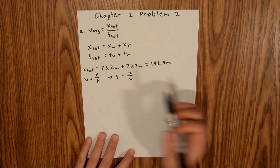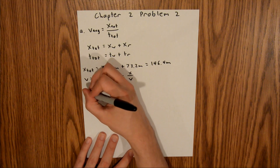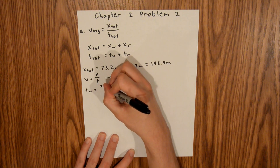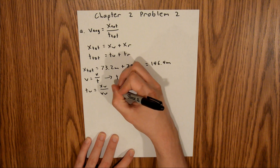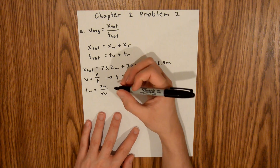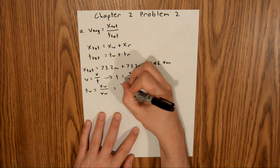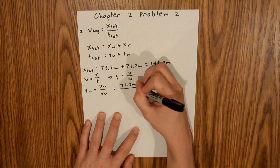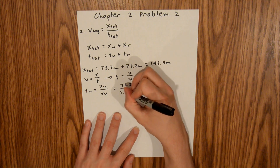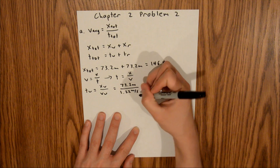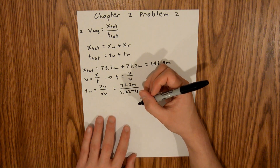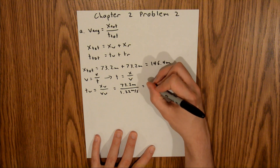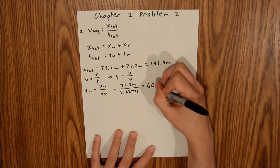Now using that equation, we can calculate the time walked and the time ran. We'll start with time walked. That is equal to displacement walked over the velocity walked, and we are given both of those values in the problem. This is equal to 73.2 meters divided by 1.22 meters per second. And if you plug that into your calculator, you will find that the time walked is equal to 60 seconds.